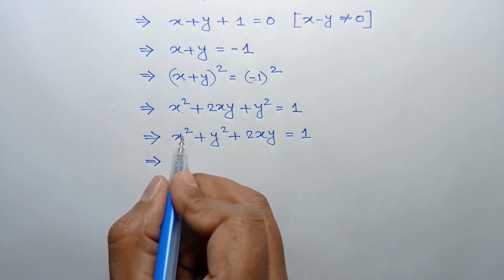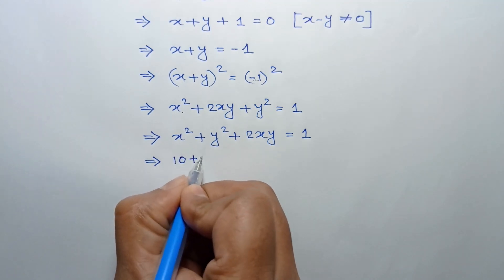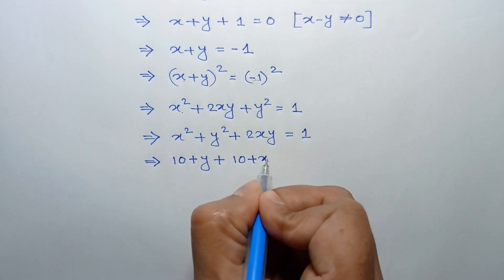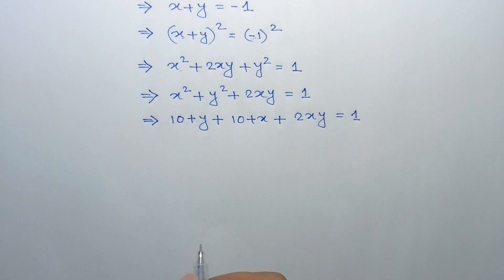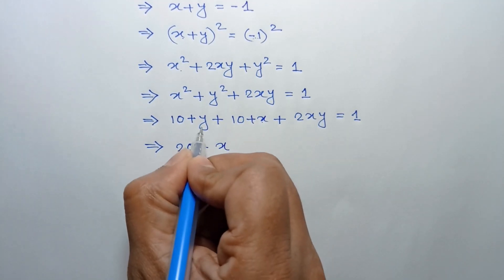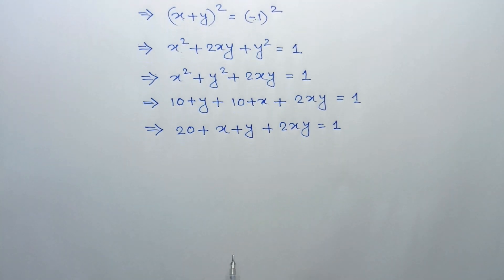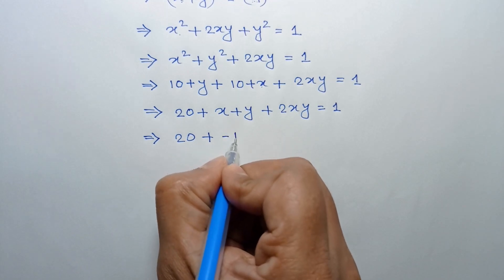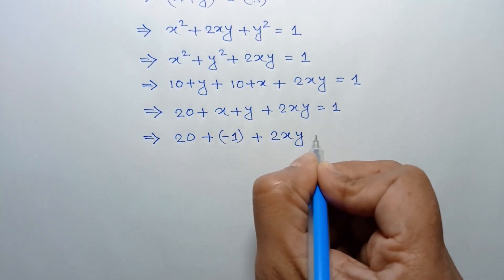From equation 1, x squared equals 10 plus y, and from equation 2, y squared equals 10 plus x. Substituting these values, we get 10 plus y plus 10 plus x plus 2xy equals 1, which simplifies to 20 plus x plus y plus 2xy equals 1. Substituting x plus y equals negative 1, we get 20 minus 1 plus 2xy equals 1.